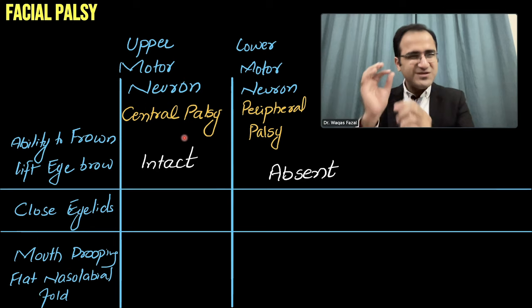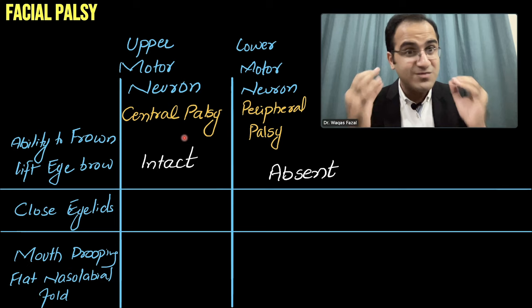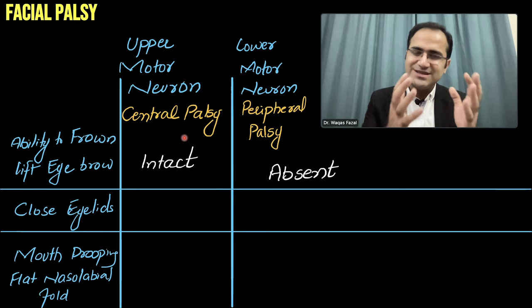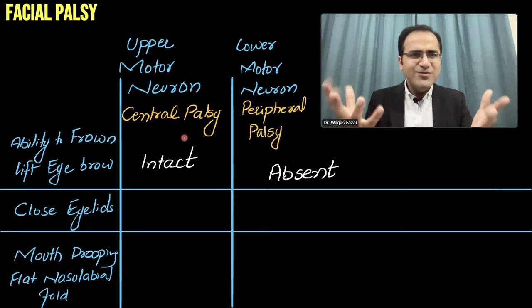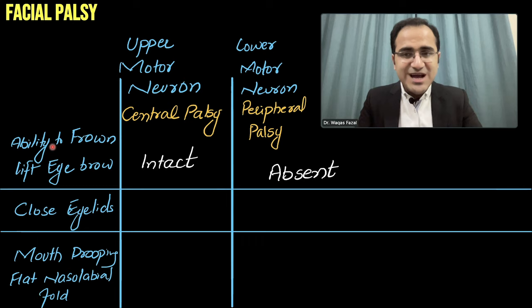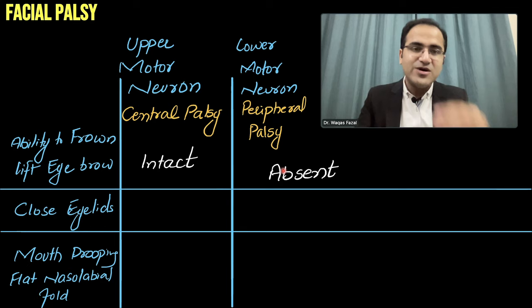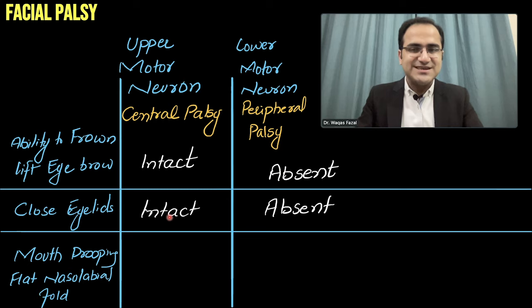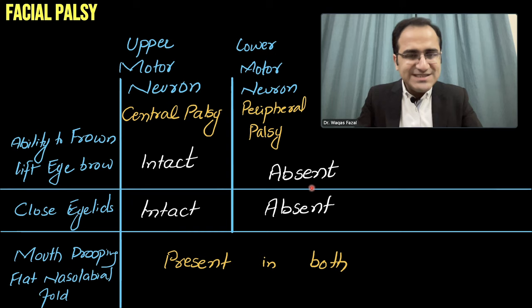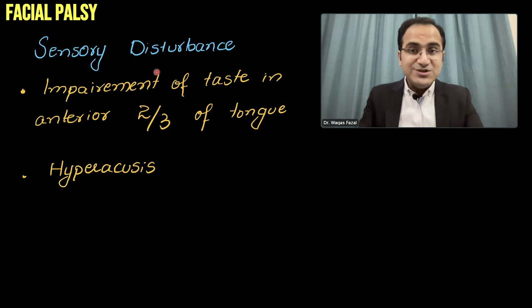The basic purpose is to understand the cause. In upper motor neuron lesion, the cause is more concerning — stroke, tumor, serious causes. In lower motor neuron lesion, the causes are mostly treatable and reversible. In central palsy or upper motor neuron lesion, the ability to frown is intact and closing eyelids is intact because the upper part of the face is not affected. In lower motor neuron lesion, frowning and eyelid closure are absent on the affected side. Mouth drooping is present in both.